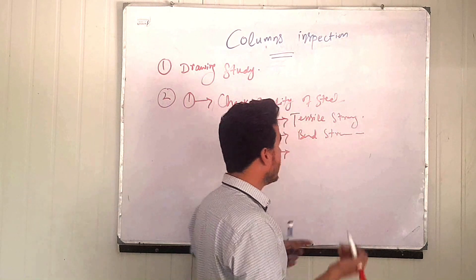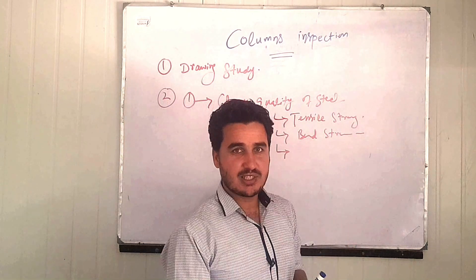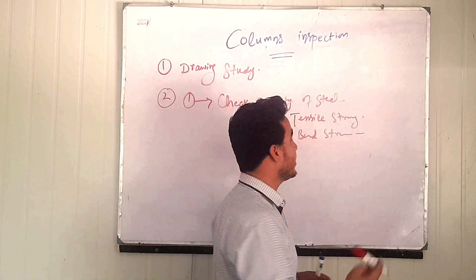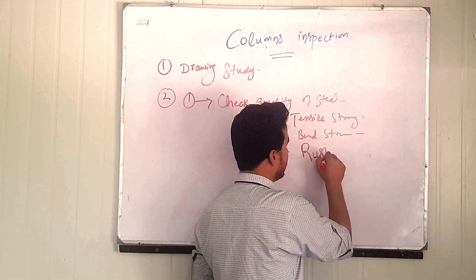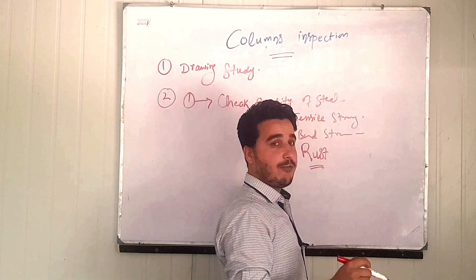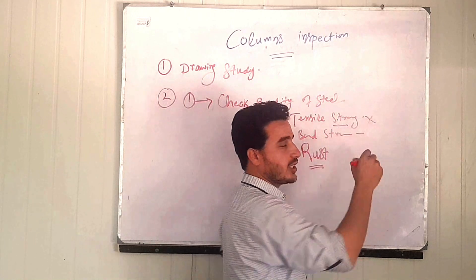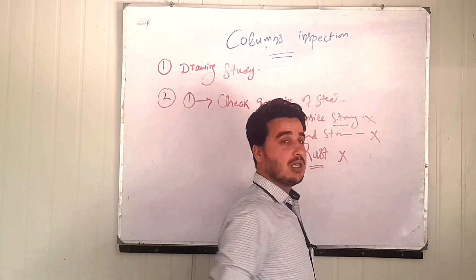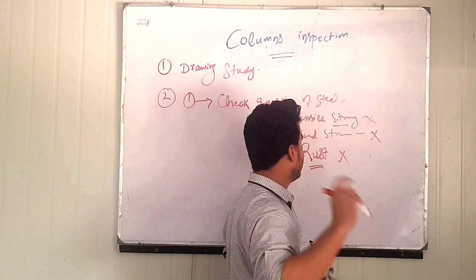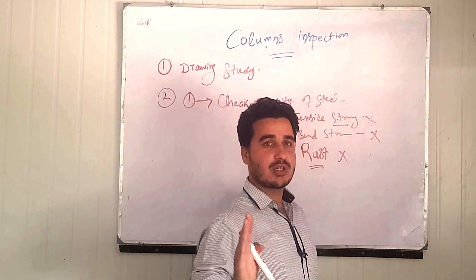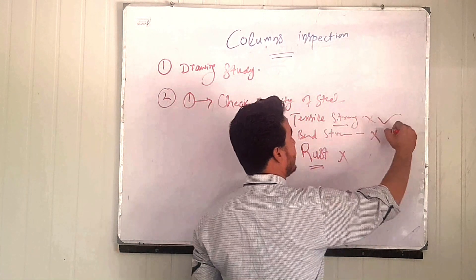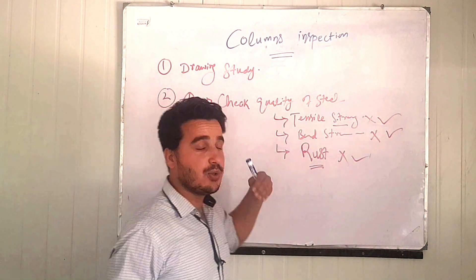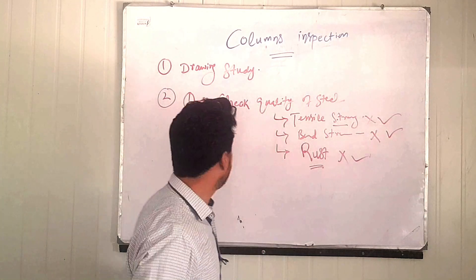There may also be rusted steel that is going to be used in the columns — that must not be allowed. If the tensile strength report or bend strength report is not available, or if there is rusting, you cannot allow that column to be concreted. All these quality checks must be satisfactory before proceeding.